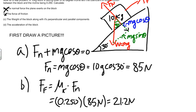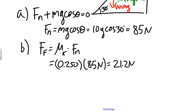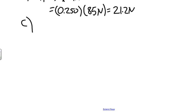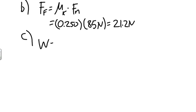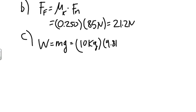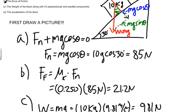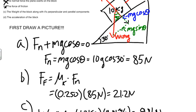Next, they want us to solve for the weight of the block along with its perpendicular and parallel components. The weight of the block is simply mass times the acceleration due to gravity: weight equals mg equals 10 kilograms times 9.81 meters per second squared, which gives a weight of 98.1 newtons. The perpendicular component — mg cos θ — we already solved for: that's 85 newtons.